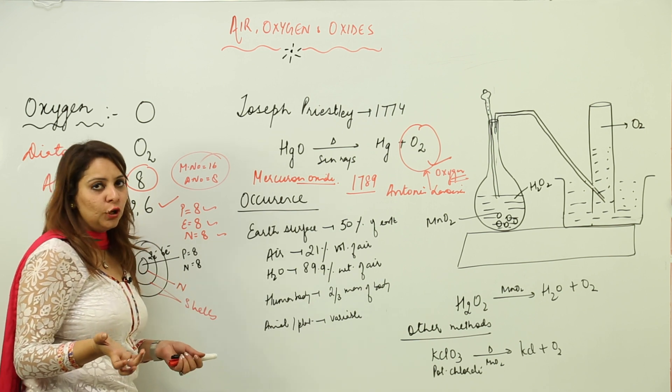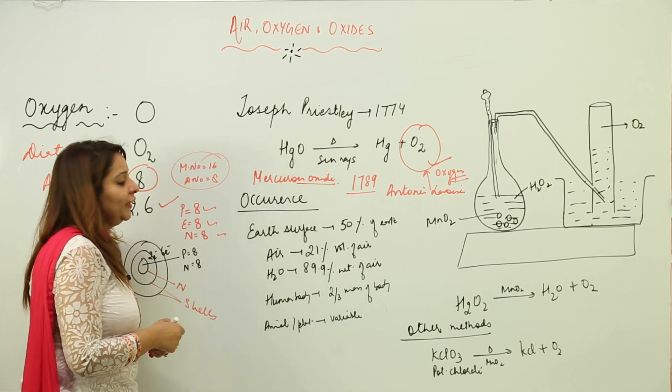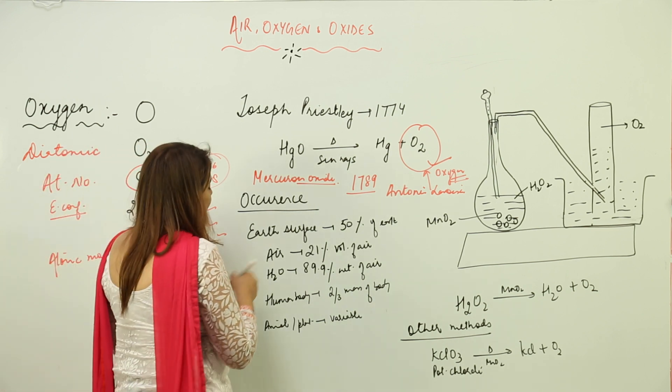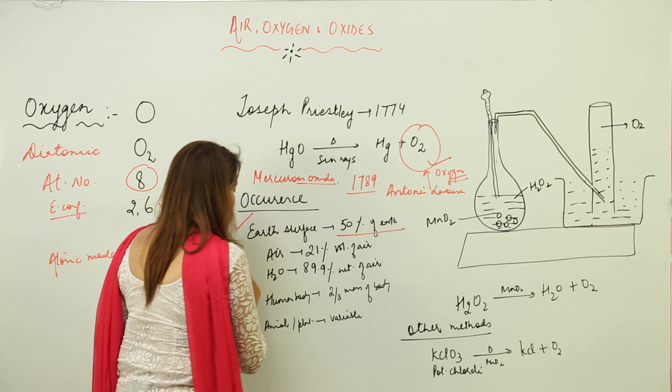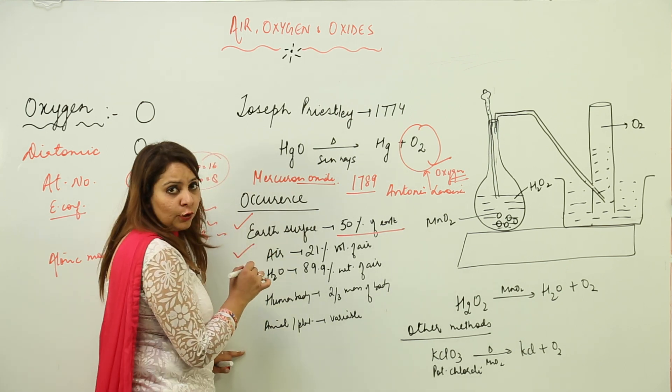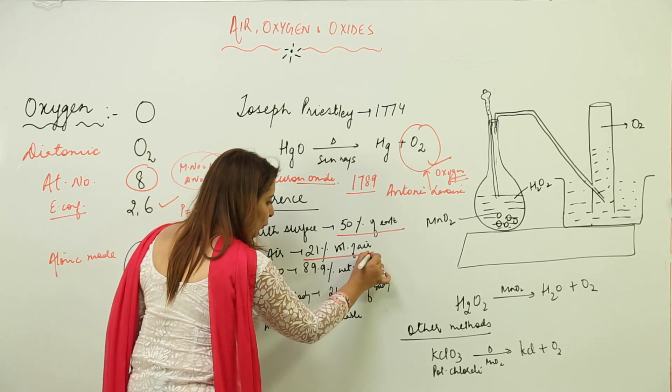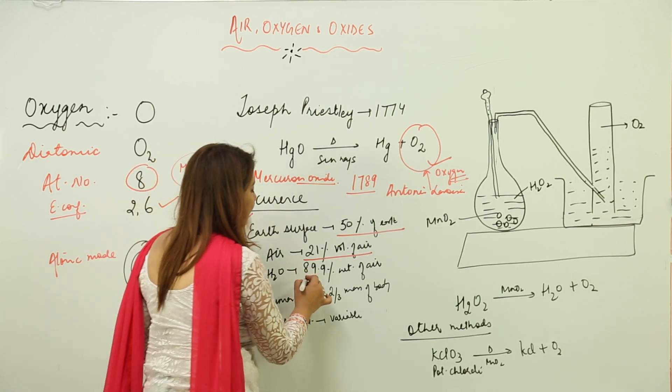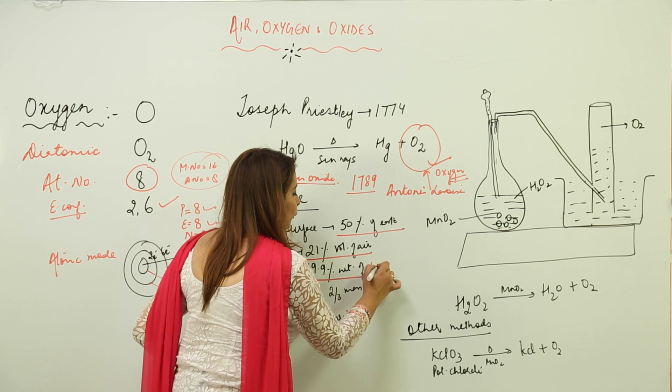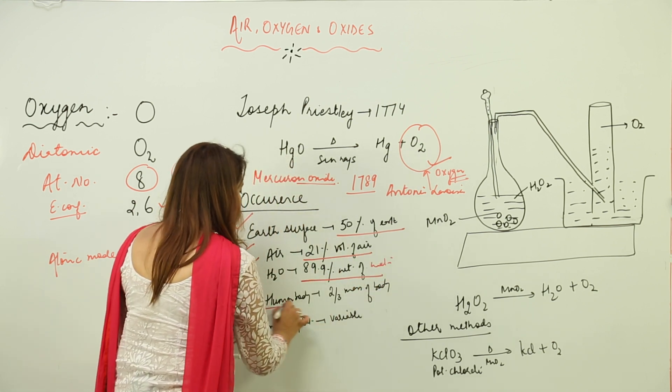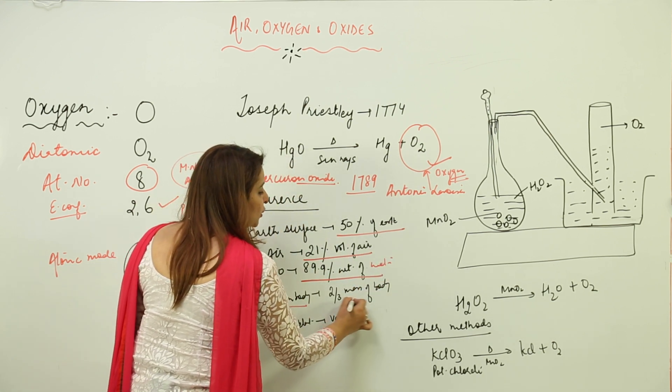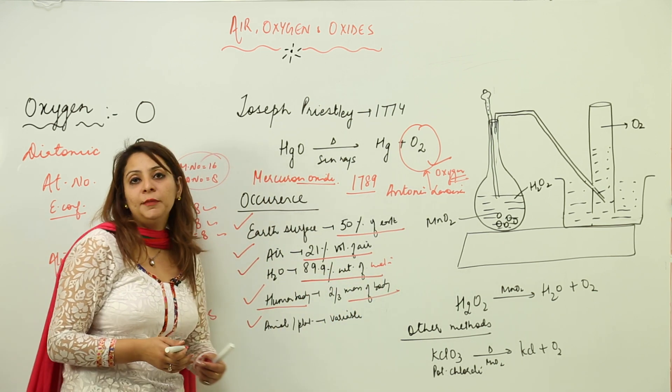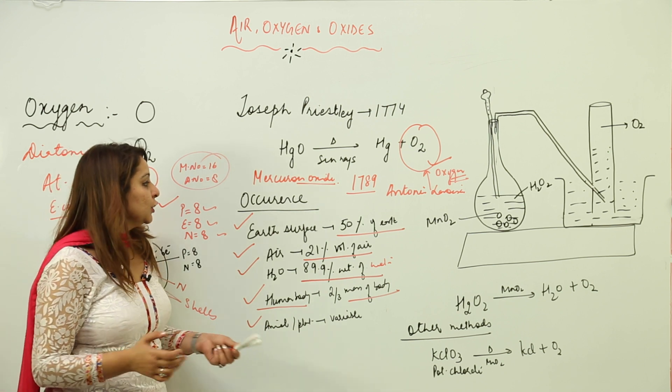So this is how oxygen was discovered. Now we know that oxygen is present almost everywhere. We'll see where its percentage is more. On Earth's surface, it is 50%. It is present in air, forming 21% volume of air. It is present in water bodies, forming 89.9% weight of water. In the human body, it forms two-thirds mass of the body. And it is also found in animals and plants, but the composition is actually variable.